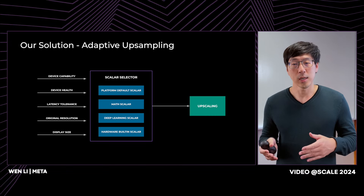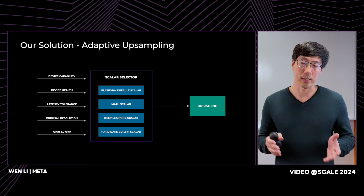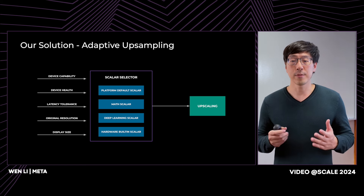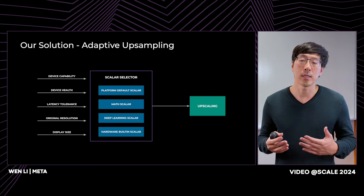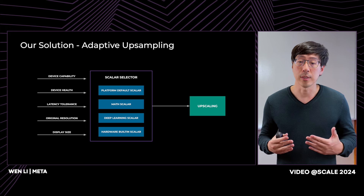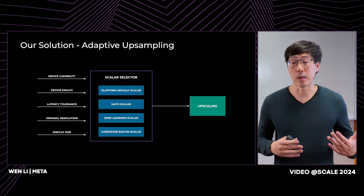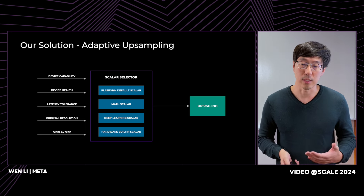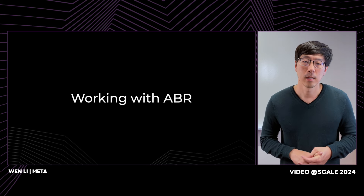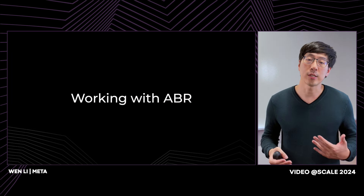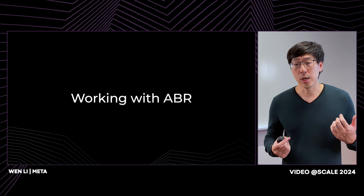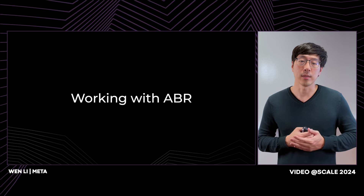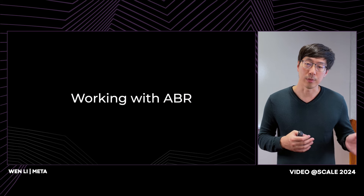So we designed an adaptive framework to choose and apply different upsampling scalers accordingly. The more powerful and healthier the device is, the more likely a fancier upscaler will be used. If the user device runs into significant device health degradation, it will immediately fall back to the platform default rendering. We also check the original resolution and the target upsampling resolution — if they end up very close, there is very low ROI in running bigger models, so we choose a cheaper scaler or just use the system default. Augmenting ABR with playback scalers can achieve wins beyond just video resolution quality.